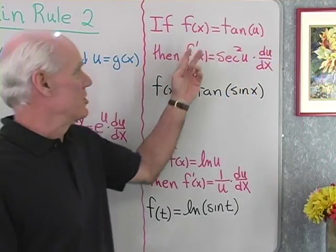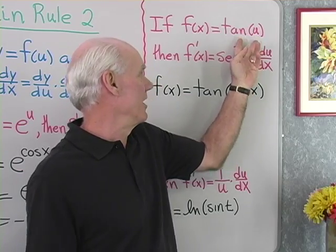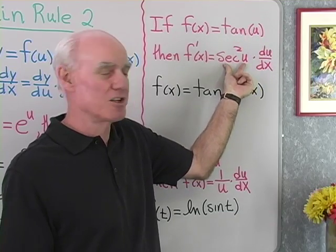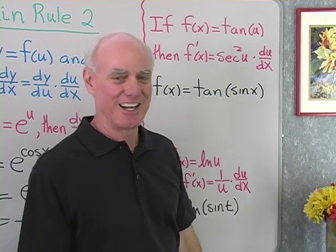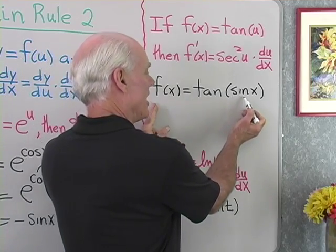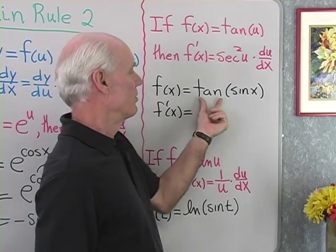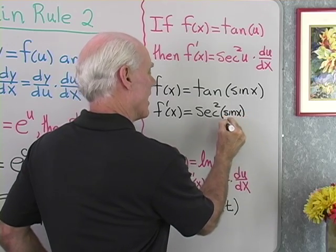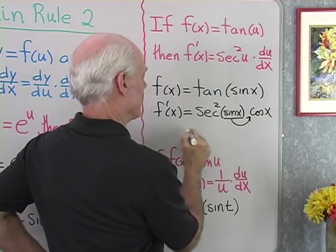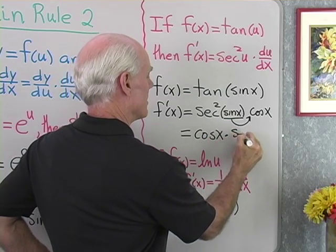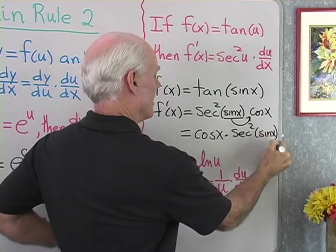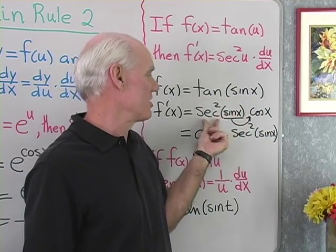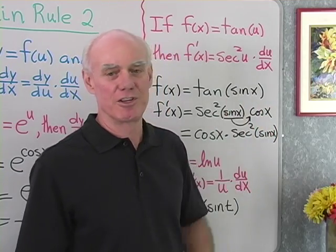Let's look at another problem. If I have a trig function, f of x equals tangent of u where u itself is a function of x, then the derivative of f with respect to x is going to be the derivative of tangent u with respect to u, which is secant squared u, then I differentiate u with respect to x. For instance, if f of x is tangent of sine x, then f prime of x is the derivative of tangent, which is secant squared of sine x, then I differentiate sine x and get cosine x. So this is cosine x times secant squared of sine x.